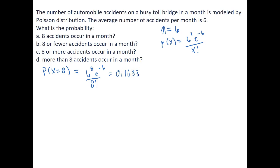That means the likelihood that exactly 8 accidents occur in a month is about 10%. If we want to move on to the next couple of problems it's going to get a little more tedious to calculate. So let's go ahead and just set up the probability expressions for B, C, and D.